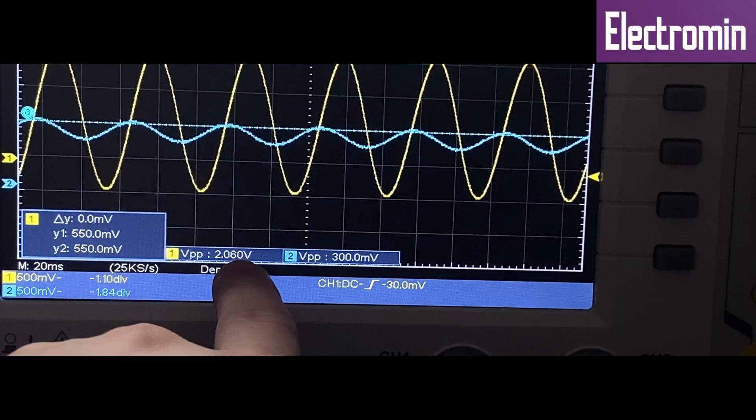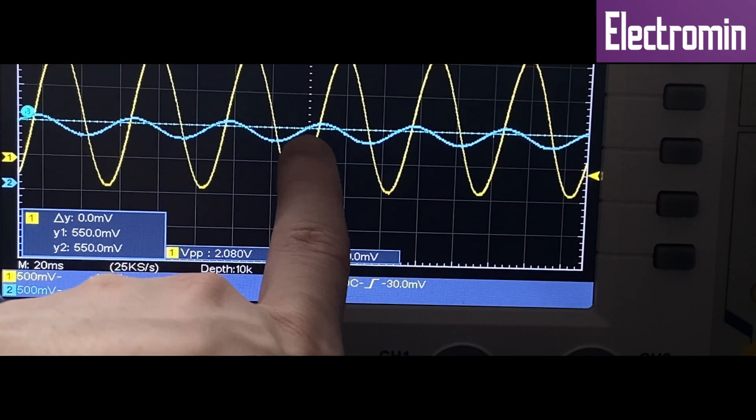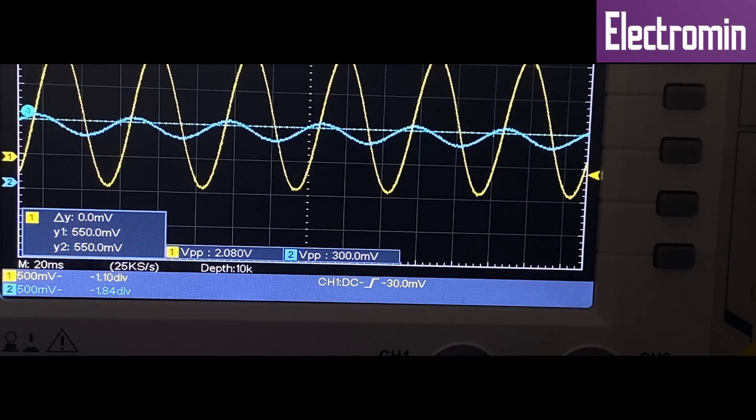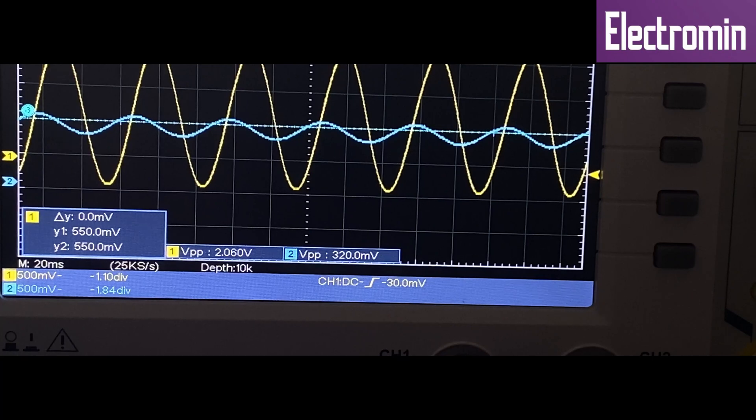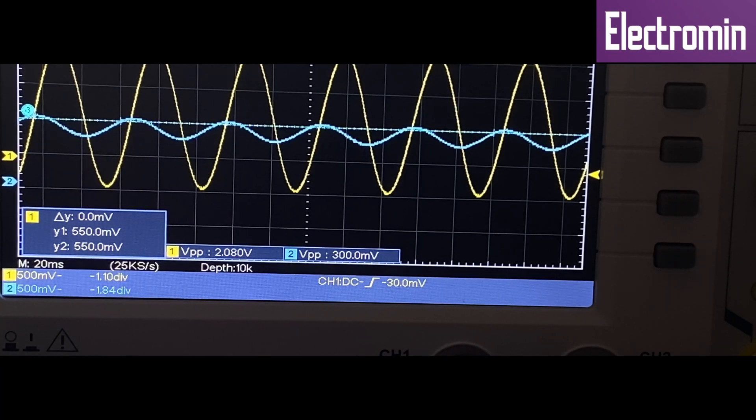The voltage peak to peak is two volts and the output signal between the capacitor and resistor is at 300 millivolts. The output voltage is too low because the frequency on the function generator is low.